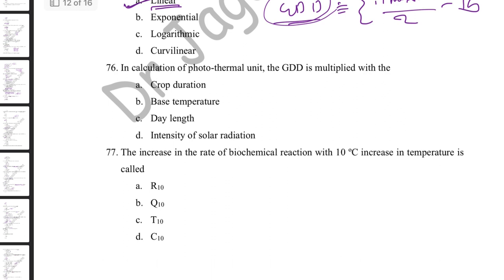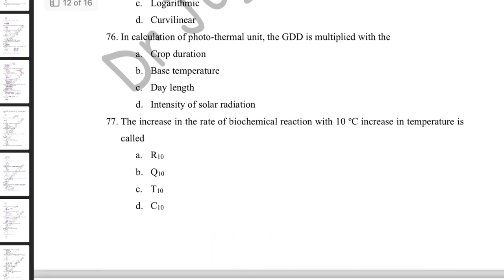In calculation of Photo Thermal Unit (PTU), GDD is multiplied by day length to overcome the linear limitation of GDD. PTU = GDD × day length. This provides more accuracy in crop development predictions.